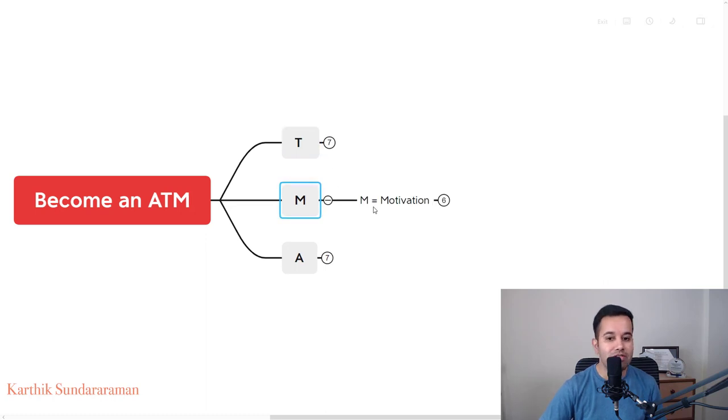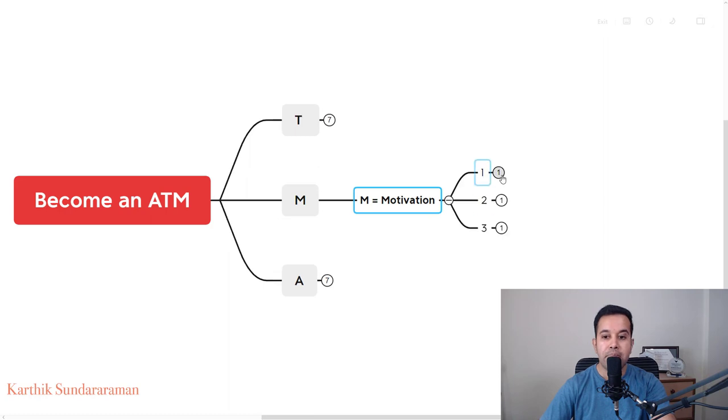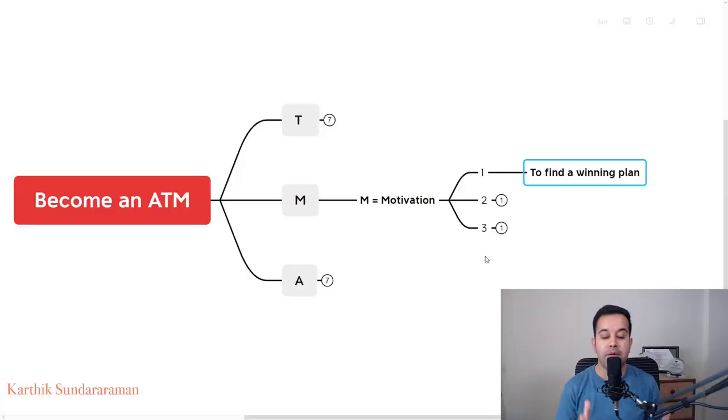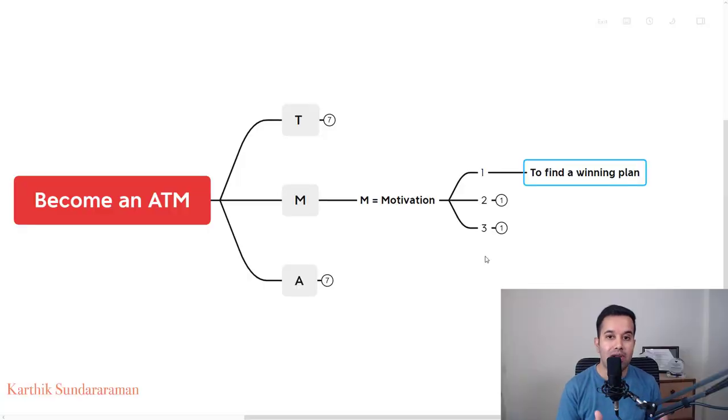And the M in this ATM stands for motivation. Under this, I'm going to share three things here. The first one is about are you motivated enough to find a winning plan, a plan that has worked for someone and the plan that you can make it work for yourself as well.